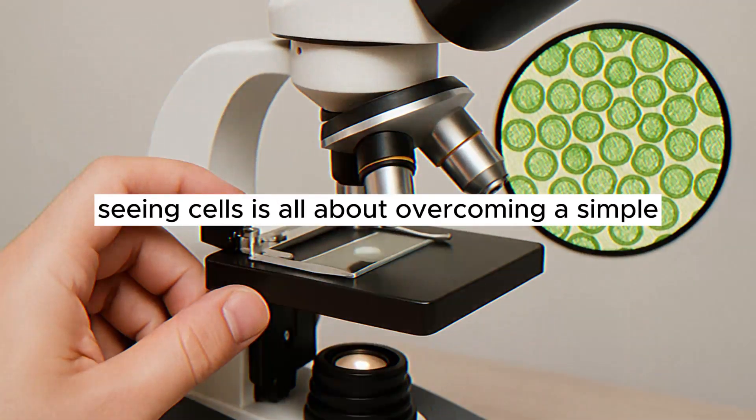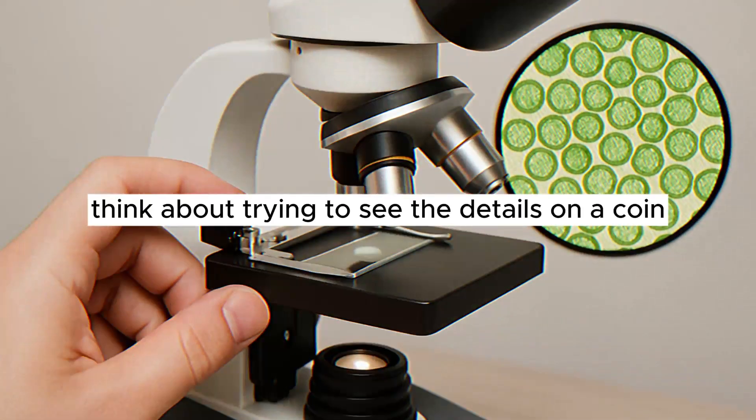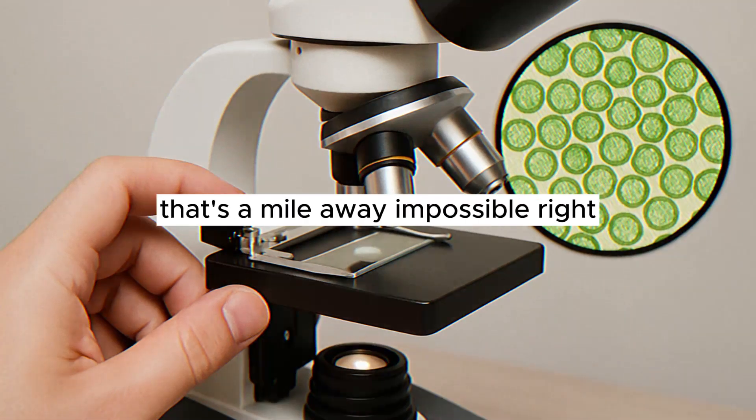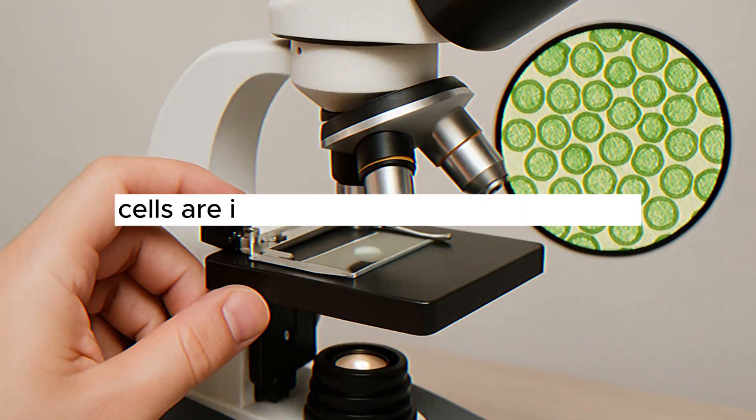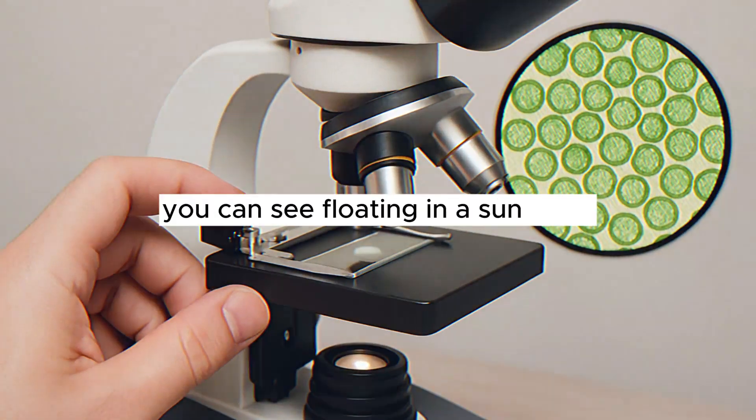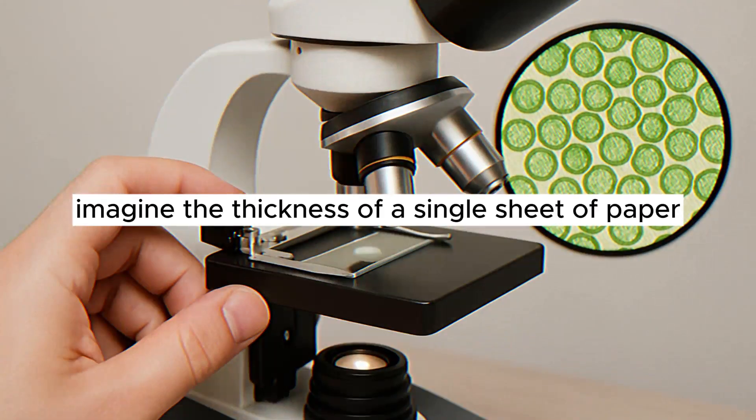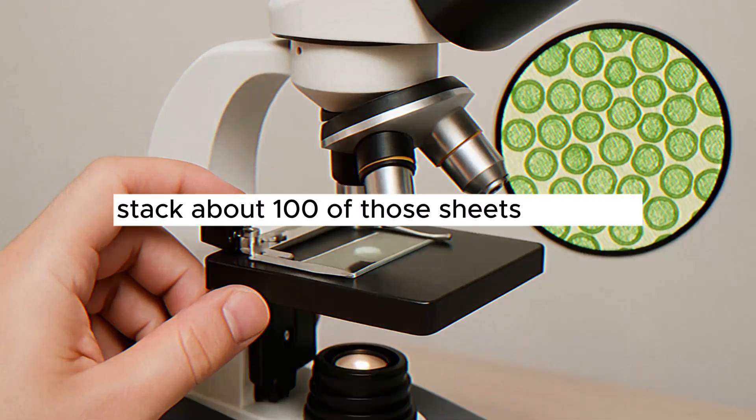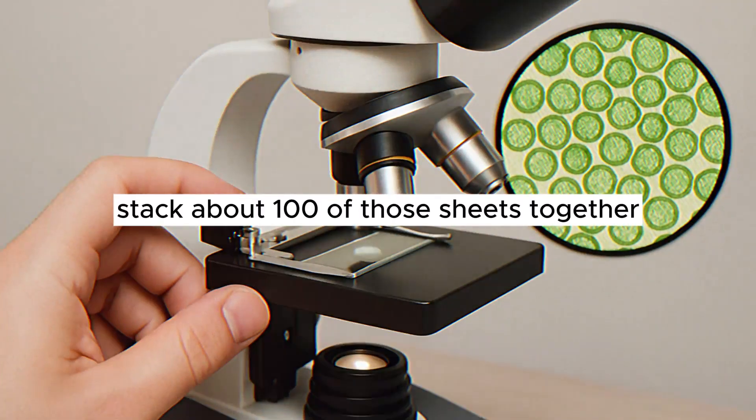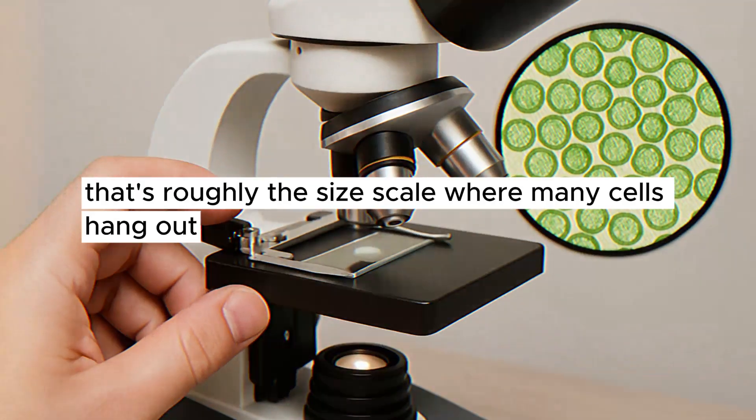Seeing cells is all about overcoming a simple limitation. Our eyes just aren't powerful enough. Think about trying to see the details on a coin that's a mile away. Impossible, right? Cells are incredibly, mind-bogglingly small. Most are way smaller than the tiniest speck of dust you can see floating in a sunbeam. To put it in perspective, imagine the thickness of a single sheet of paper. Stack about a hundred of those sheets together. That thickness? That's roughly the size scale where many cells hang out.